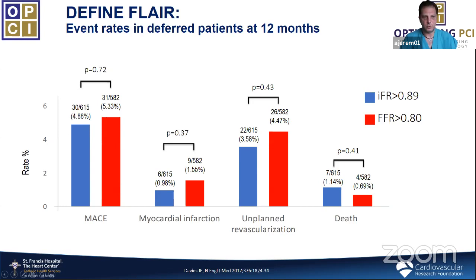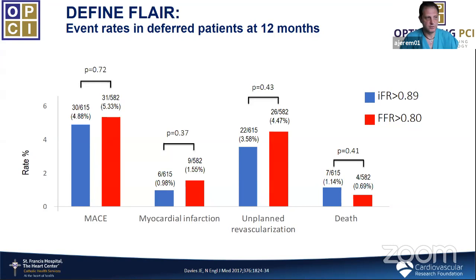Looking at patients deferred at 12 months — which is what we care most about — MACE was the same between iFR and FFR, and all individual endpoints were very similar and non-significant statistically. Many of us now use any of these resting indices similarly to how we use FFR. Subsequent studies comparing all resting indices show the bottom line: they're all the same.